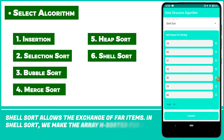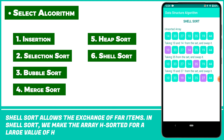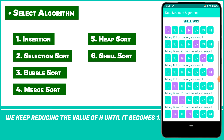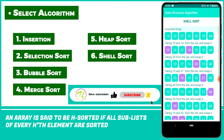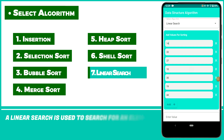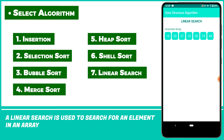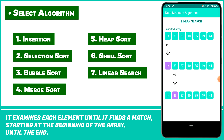Shell sort allows the exchange of far-apart items. In Shell sort, we make the array h-sorted for a large value of h, and keep reducing the value of h until it becomes 1. An array is said to be h-sorted if all the sublists of every h-th element are sorted. A linear search is used to search for an element in an array. It examines each element until it finds a match, starting from the beginning of the array until the end.